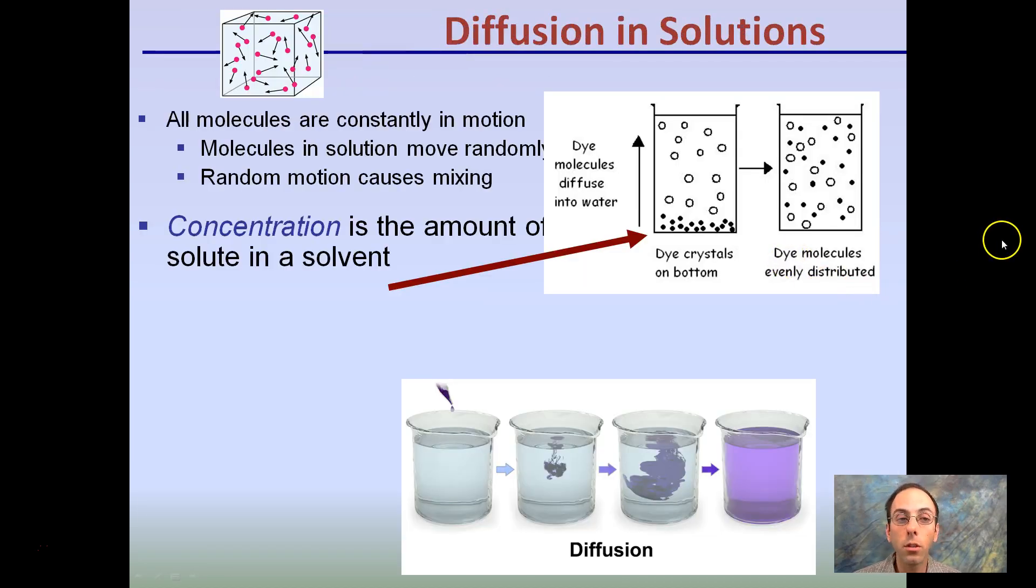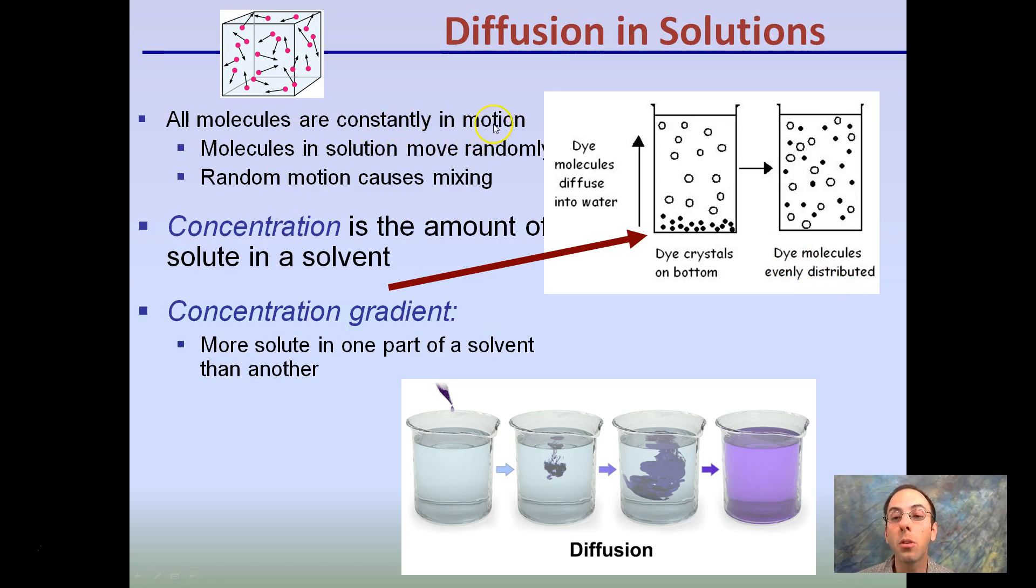So, diffusion in solutions: all molecules are constantly in motion. Remember, only at absolute zero are things not moving. We have yet to reach absolute zero. Molecules in solution move randomly, and the random motion causes the mixing. Concentration is the amount of solute in a solvent, and concentration gradient is the more solute in one part than another. We see the example here. We had a drop of dye. Here, it's very concentrated. Slowly over time, it diffuses without any mixing. The simple moving of those molecules around cause that dye to get moved around and to mix.